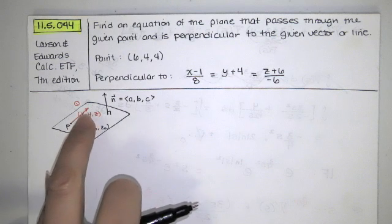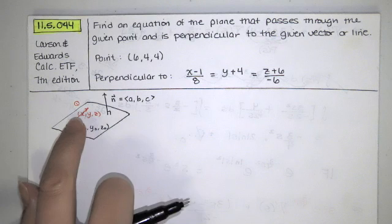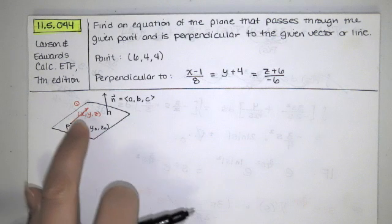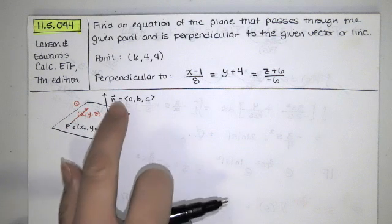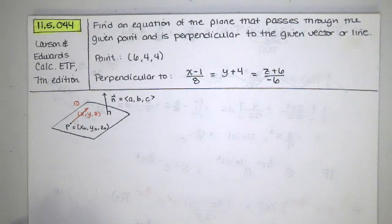So all of the x, y, z's that cause the vector from x naught, y naught, z naught to x, y, z to be perpendicular or orthogonal to this vector with components a, b, and c.